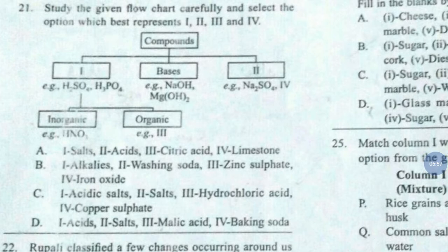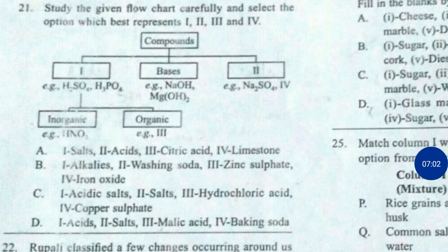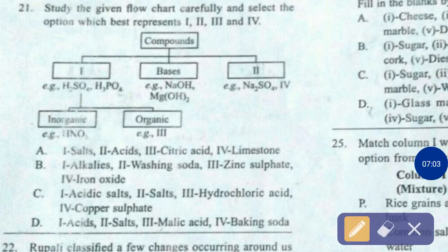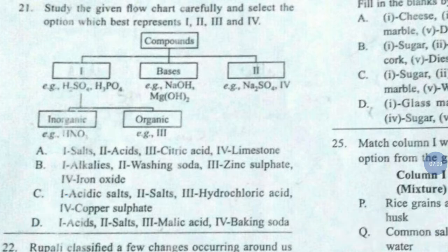Question number 21. Study the given flow chart carefully and select the option which best represents first, second, third and fourth. The correct answer is option number D — first: acid, second: salt, third: malic acid, fourth: baking soda.